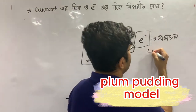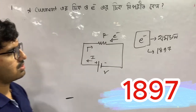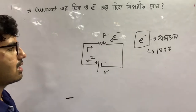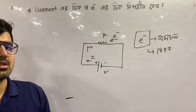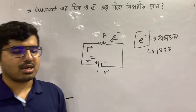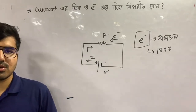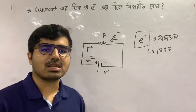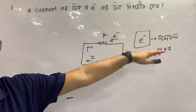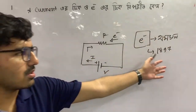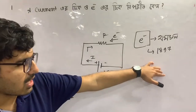It is called an electron. It is called a proton. It is called a neutron. It is called a proton-electron. The electron is called Thomson — it is called the plum pudding model. It is called a satellite.